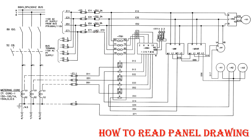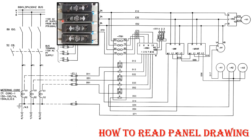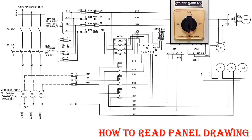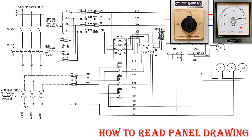After the fuse links, the wire designation changes: E11 becomes E12, E31 becomes E32, and E51 becomes E52 for R, Y, B phases respectively. These wires go into the voltage selector switch, and through the voltage selector switch they go into the voltmeter, which indicates the kilovolts of the panel.